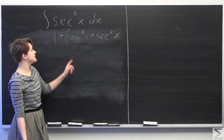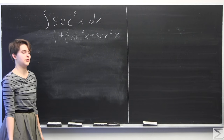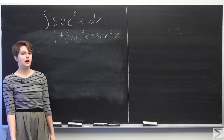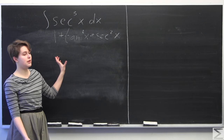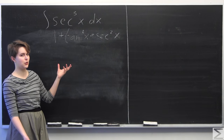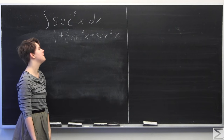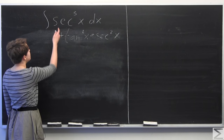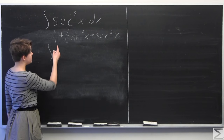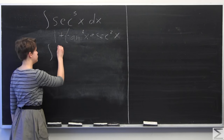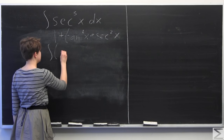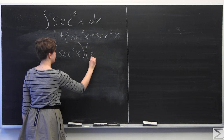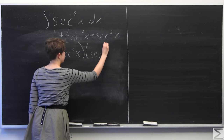We have 1 plus tangent squared of x equals secant squared of x. You can obtain this trigonometric identity from the one you may be more familiar with: sine squared of x plus cosine squared of x equals 1. Now we're going to break up secant cubed of x into two parts: secant squared of x and secant of x.